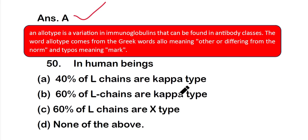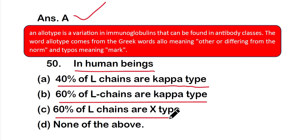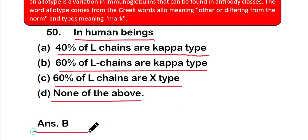Question 50: In human beings, option A 40% of light chains are kappa type, option B 60% of light chains are kappa type, option C 60% of light chains are lambda type, or option D none of the above. The right answer is option B — in human beings, 60% of light chains are kappa type.